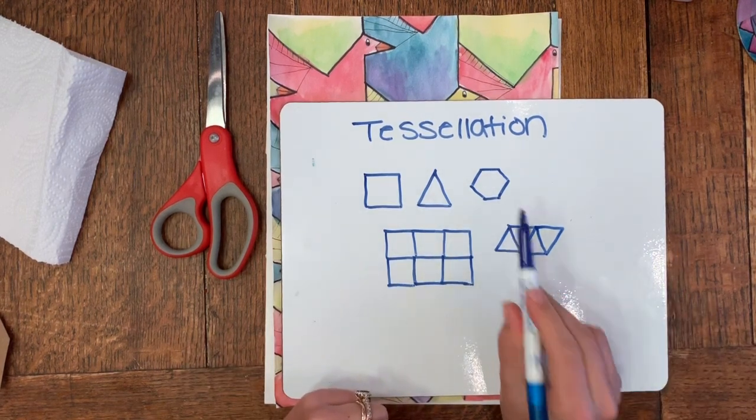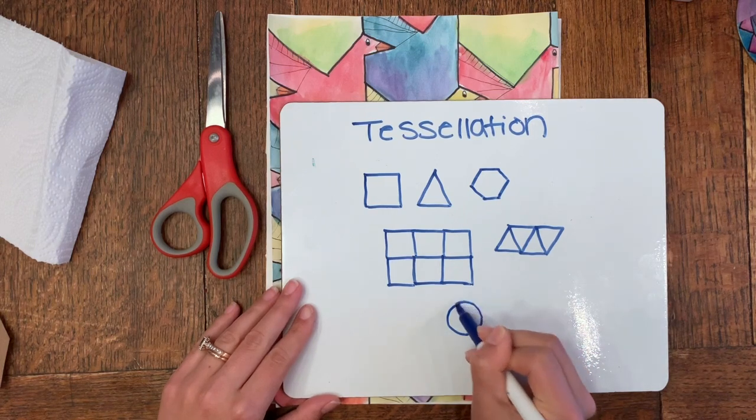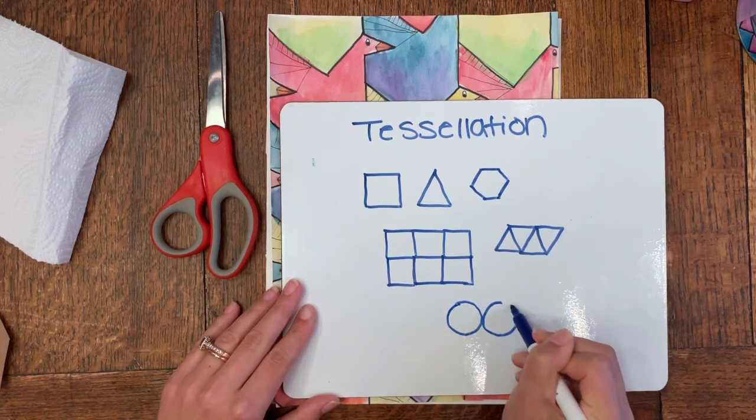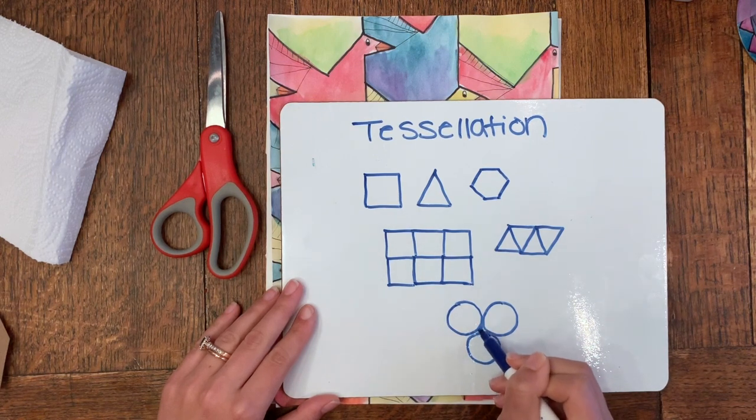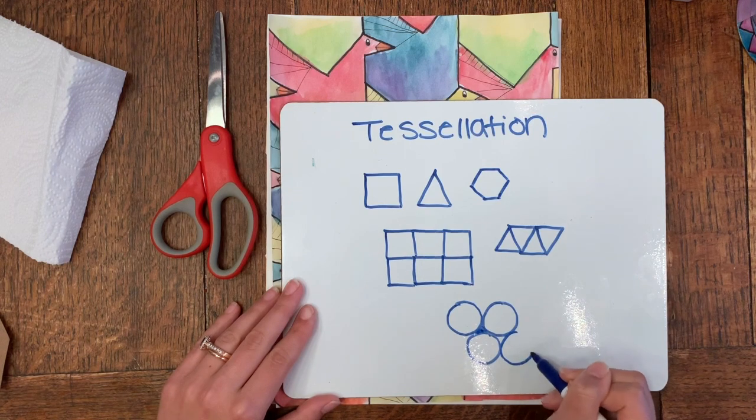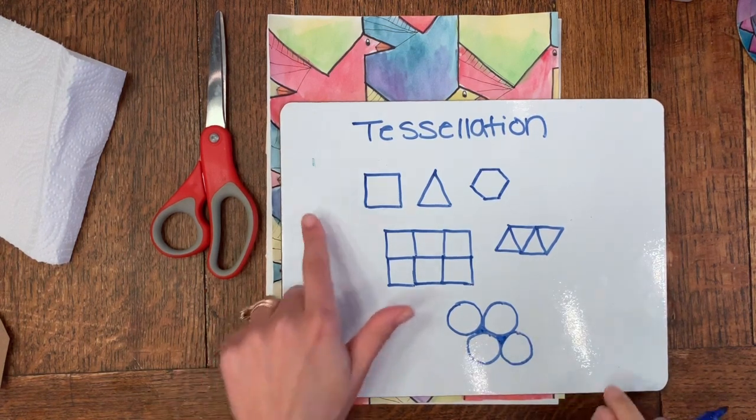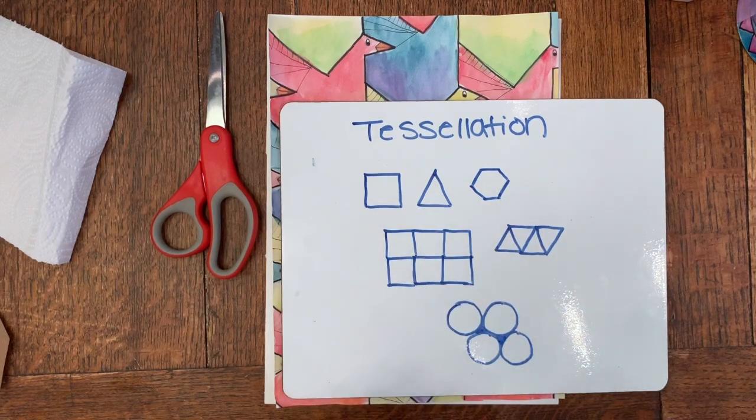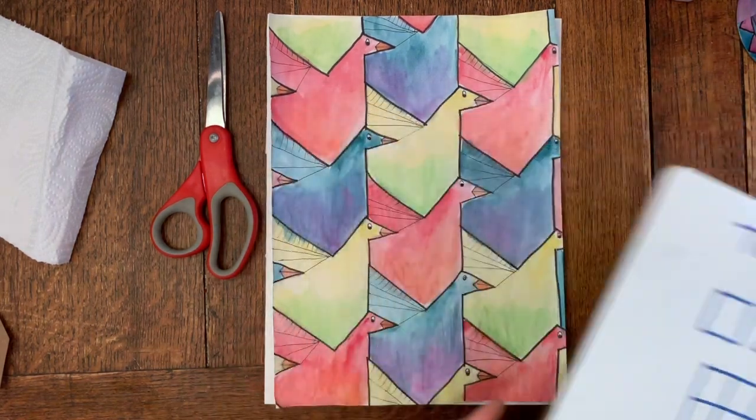I could do the same thing with the hexagon. Now if I tried to do that with a circle, I'm going to be left with these gaps. That extra space creates a gap, which means the circle does not tessellate. These are the three natural shapes that do that on their own.